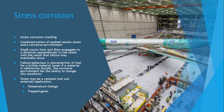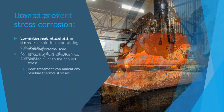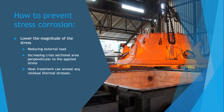Stress-corrosion cracking results from the combined action of applied tensile stress and a corrosive environment. Small cracks form and propagate perpendicular to the stress, potentially causing failure with brittle fracture behavior — even in normally ductile materials. Stress may be residual rather than externally applied, such as from temperature changes or trapped gases. Stainless steels are vulnerable in chloride-ion solutions, and brasses are vulnerable near ammonia. Prevention includes reducing external load, increasing cross-sectional area perpendicular to the applied stress, and heat treatment to anneal residual thermal stresses.